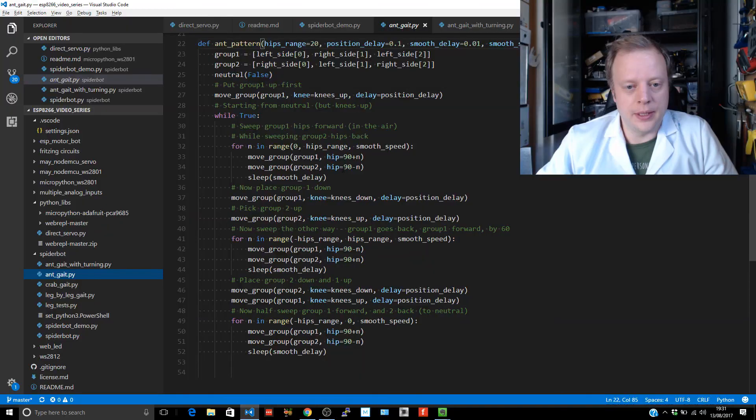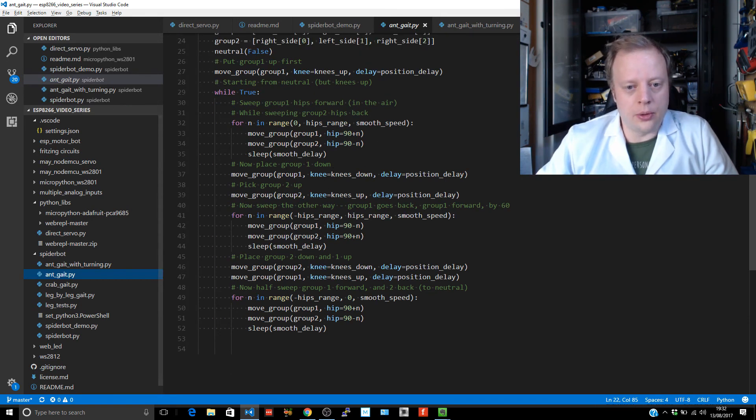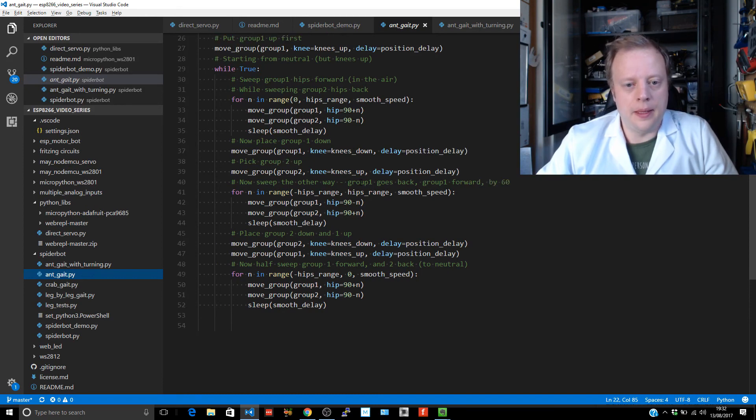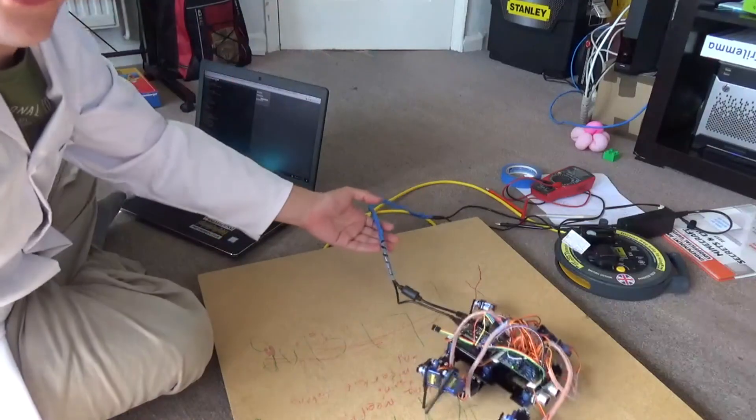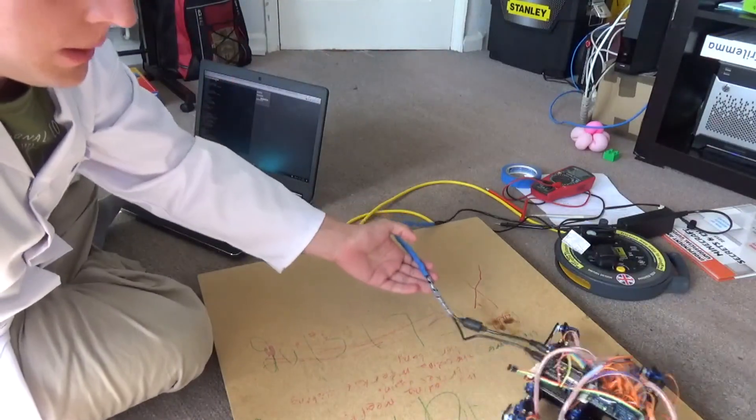I've created the groups - it's the same patterns as crab gait: left, right, left and right, left, right. Put the first group up so knees up, and we wait to whatever the positional delay is. Then we start sweeping - this is the same kind of sweeping as in the leg by leg group, but now we're moving group one going forward, group two going backwards. This is the ant pattern. Then we wait this smooth delay speed so we get smooth movement. Put group one down, bring group two up - knees down here, knees up there. Then we sweep the other way, so now group two is going forward, group one is going back. Swap them - knees down, knees up, and start the sweep again. This sweeps back to the neutral position, so it can start from neutral. When it hits this it should be in the neutral position then moving backwards. This is far more effective than the spider pattern was.